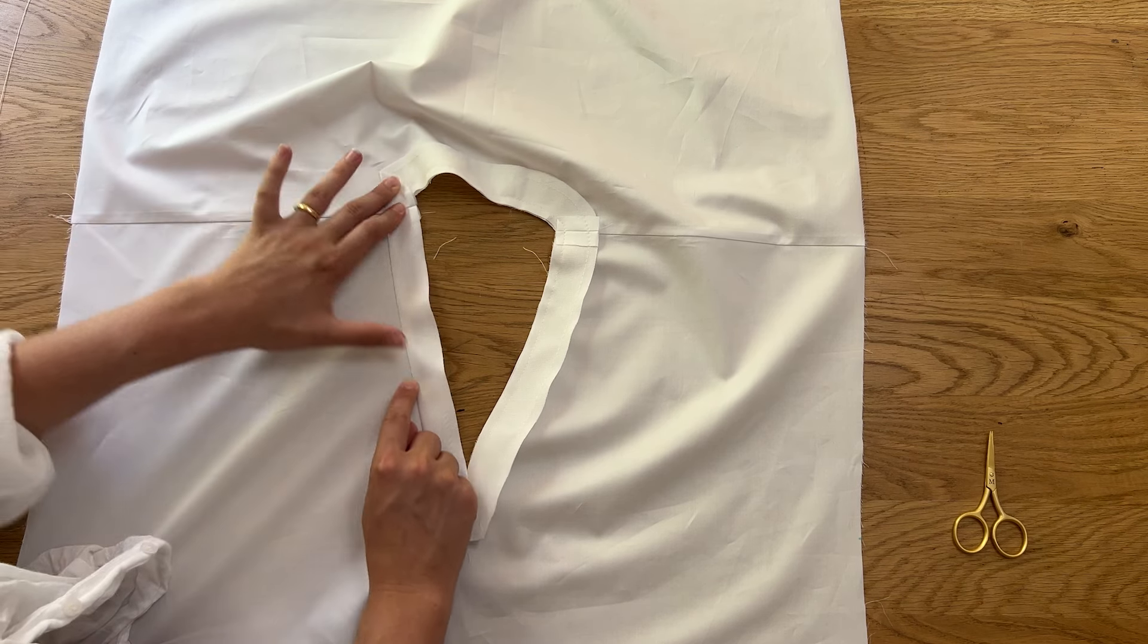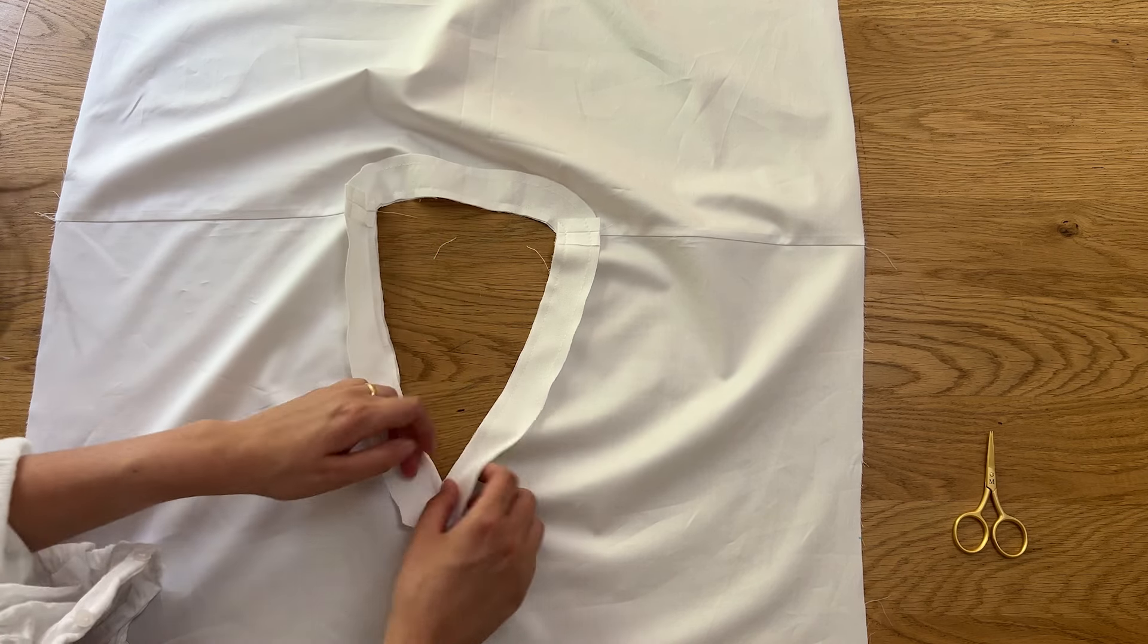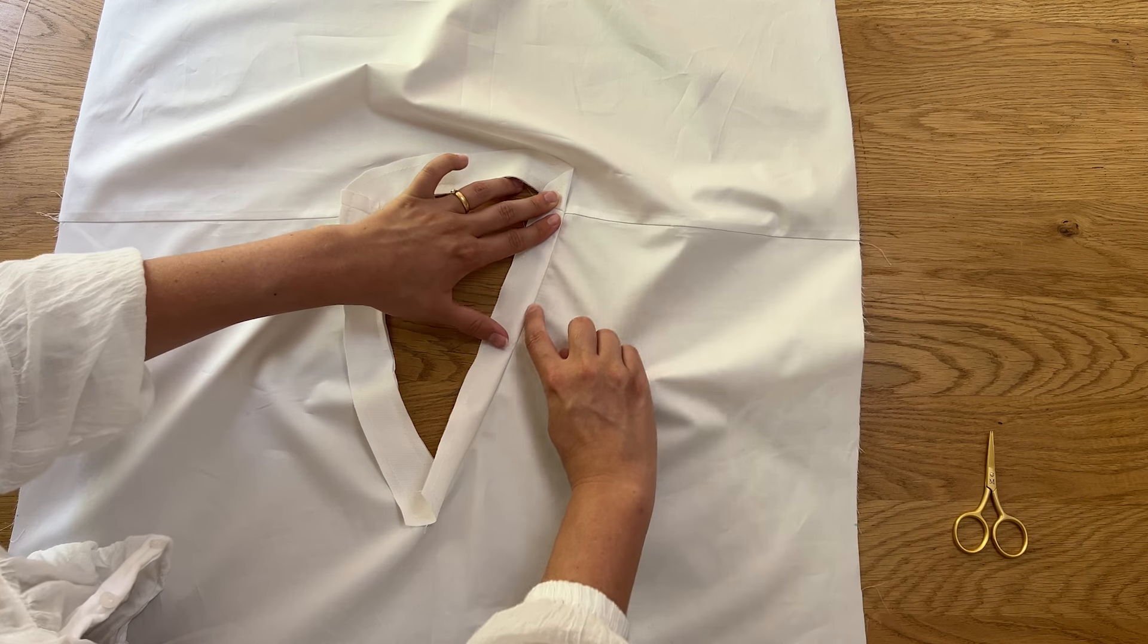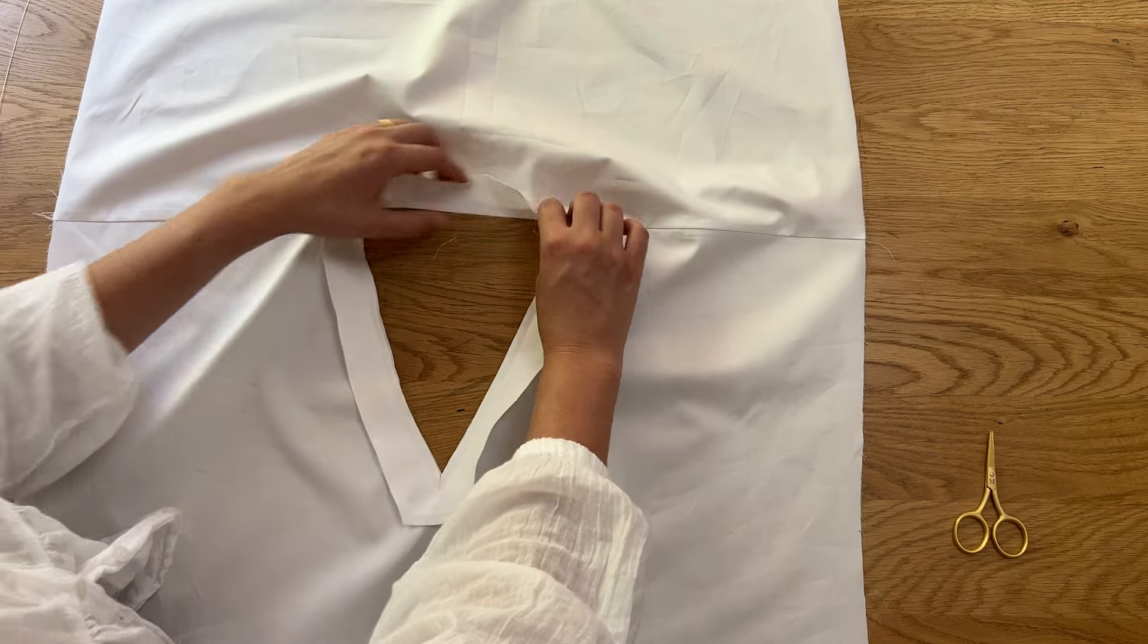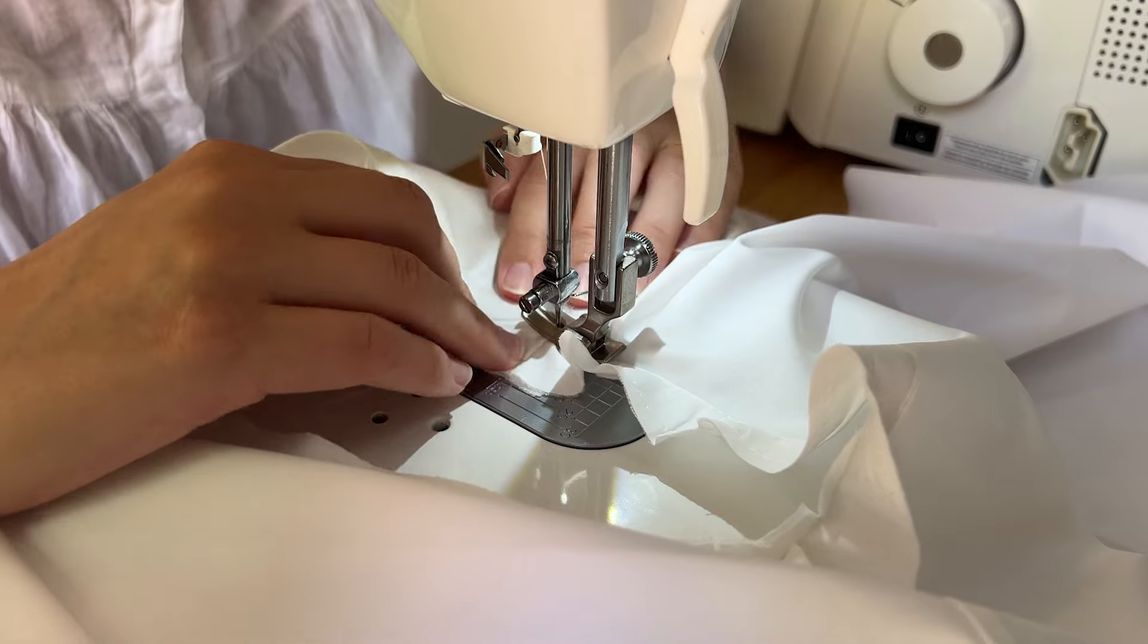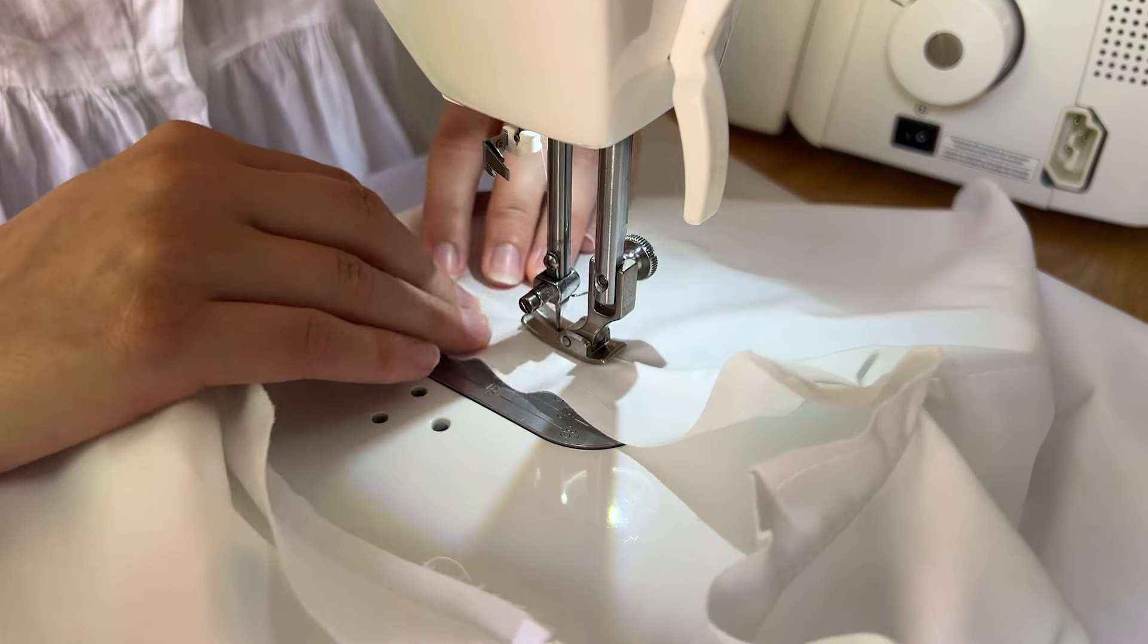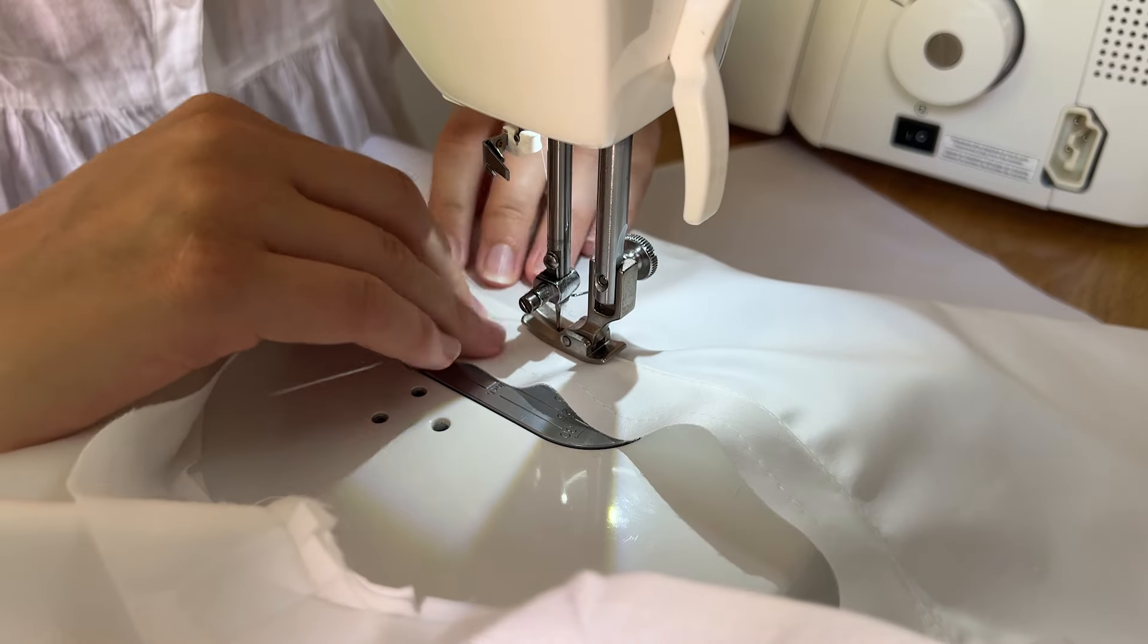Next, understitch the facing to the seam allowance. This will also help the facing to sit nicely on the inside of the dress and avoid any part of it being seen on the right side. As you sew, make sure to check that the seam allowance is still underneath the facing as you stitch them together.